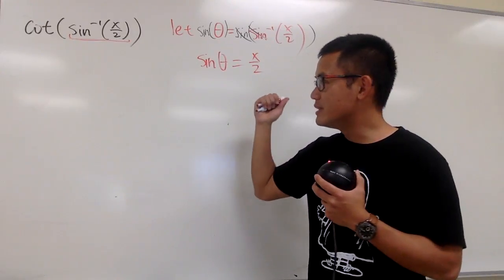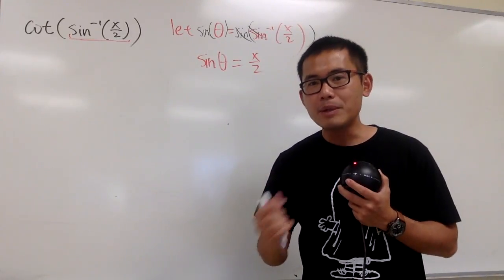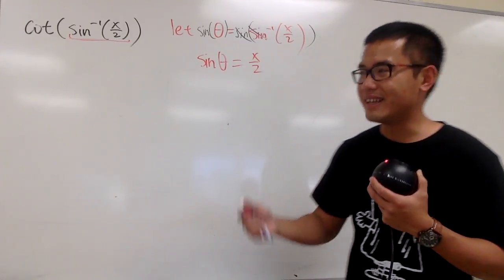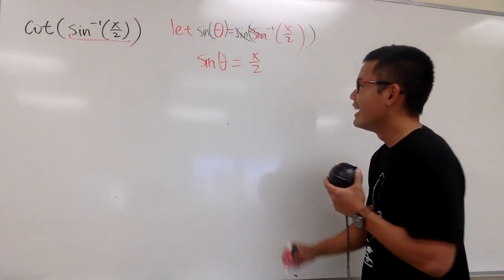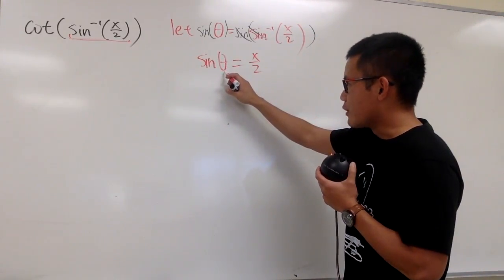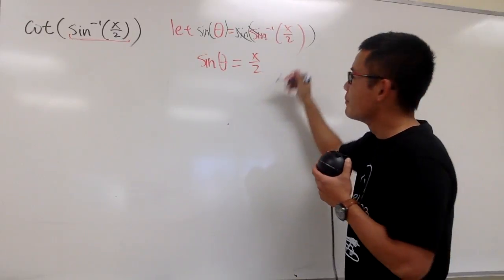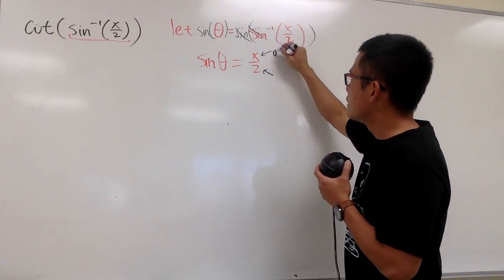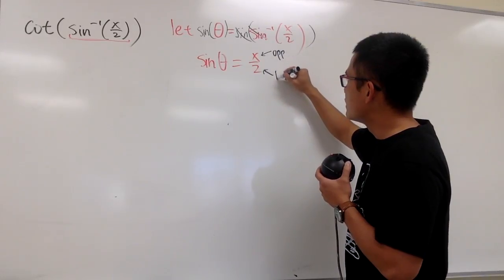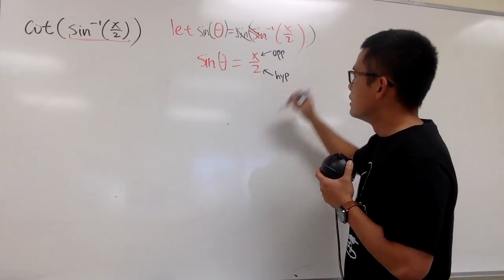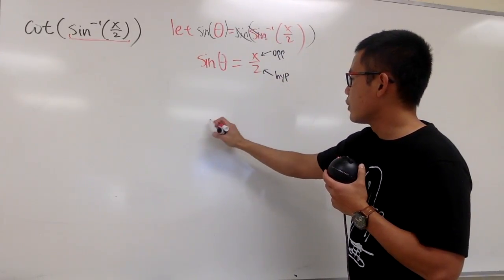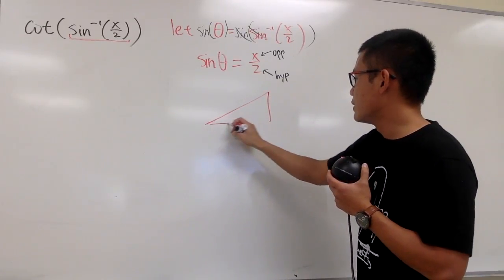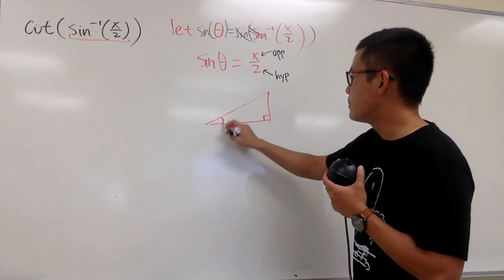And you are going to use this information to come up with a picture of a right triangle, and then we will be able to finish this. Sine of an angle is equal to x over 2. You know sine, in a right triangle, by definition, is the opposite side over the hypotenuse side. So let's draw that right triangle right here, and just always draw it this way for consistency purpose.